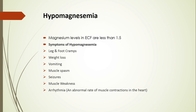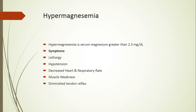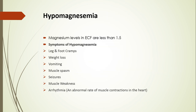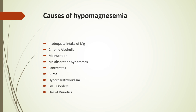Hypomagnesemia is a low level of magnesium in the body. Symptoms include weight loss, leg and foot cramps, vomiting, muscle spasm, muscle weakness, and arrhythmia. Causes include inadequate intake of magnesium, high alcohol intake, malnutrition, malabsorption of magnesium, pancreatitis, burns, hyperparathyroidism, gastrointestinal disorders, and excessive use of diuretics.